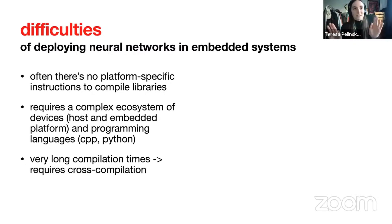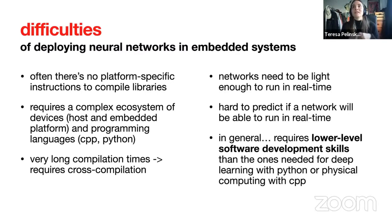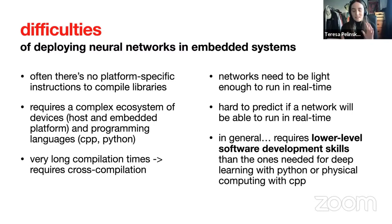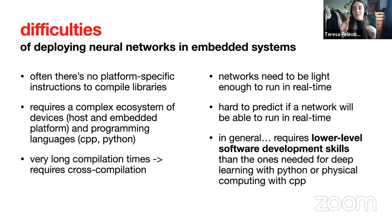Networks need to be very light to run in real time on this CPU, which is more than 10 years old and has limited computational capacity. It's also hard to predict whether a network will run in real time without actually running it. You can estimate by counting the number of floating-point operations, but it's hard to calculate the actual time because hardware accelerations built into your libraries can significantly affect how long the network takes to run. In general, combining deep learning skills with basic C++ requires lower-level software development skills.